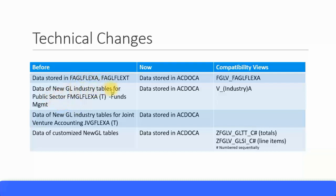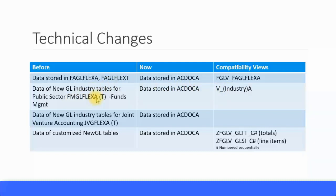Regarding industry tables for new GL, such as those for public sector — FMGL_FLEXA for line items or FMGL_FLEXT for totals (FM stands for Funds Management, under the public sector) — that data was previously stored in FMGL_FLEXA or FMGL_FLEXT. Now it is stored in ACDOCA, since all financial entry line item entries are stored there. The compatibility view is V_INDUSTRY or V_PUBLIC_SECTOR_A, which is the line item compatibility view pointing to the ACDOCA table if any programs reference these old tables.